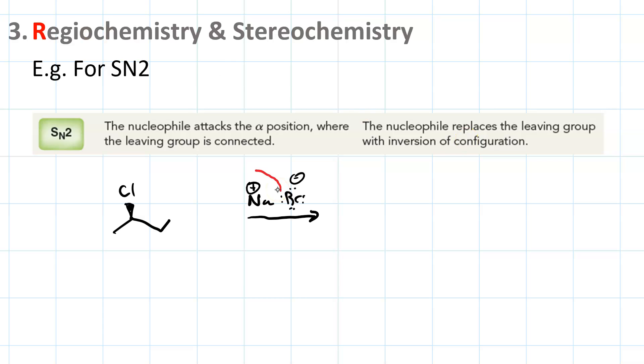Here, a lone pair in a bromide ion performs nucleophilic attack on the alpha carbon of the secondary alkyl halide. The chloride leaves. We get a secondary alkyl bromide with inversion of configuration. We also get a chloride ion. The sodium is a spectator.